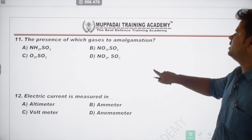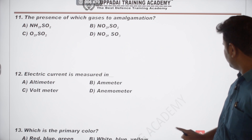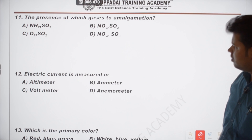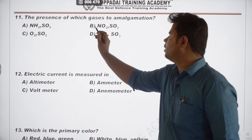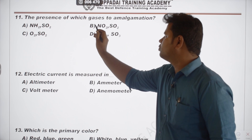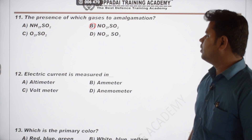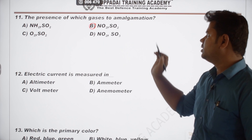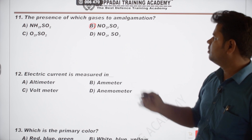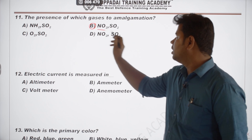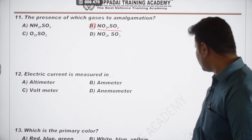The 11th question: the presence of which gases causes amalgamation? The answer is Option B — sulfur dioxide and sodium dioxide.